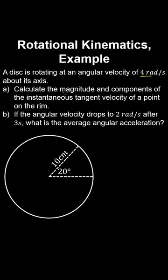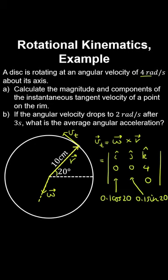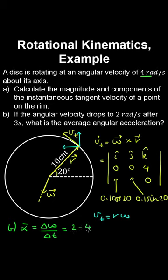A disc rotating at 4 rad/s about its axis: calculate the magnitude and components of the instantaneous tangential velocity at a point on the rim. The tangential velocity is the cross product of angular velocity and radial vector; using the determinant method with angular velocity components in the first row and radial vector components from trigonometry in the second row gives the horizontal and vertical components. The magnitude is simply r times omega. For part B, the average angular acceleration equals the change in angular velocity divided by the change in time over 3 seconds; a negative result means it is clockwise, pointing into the screen.